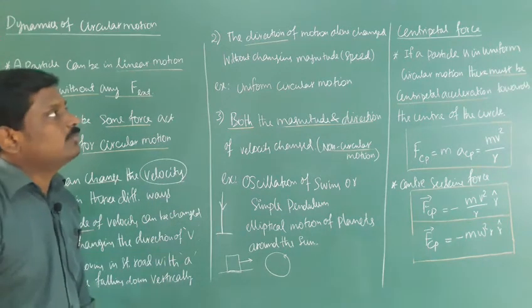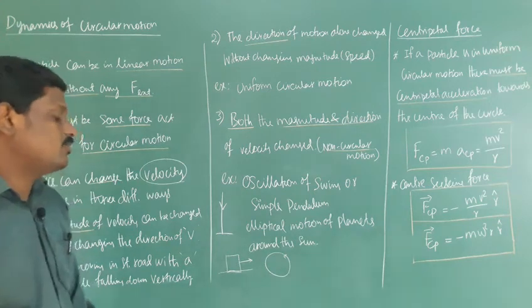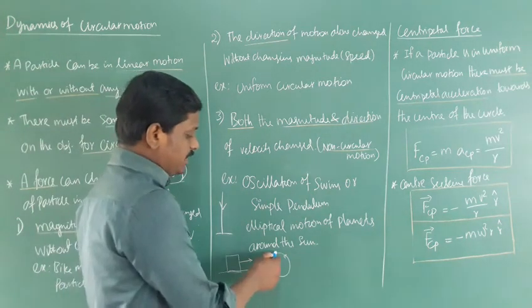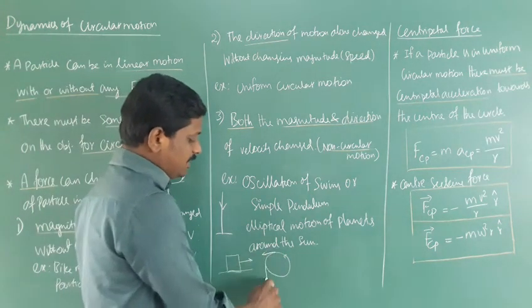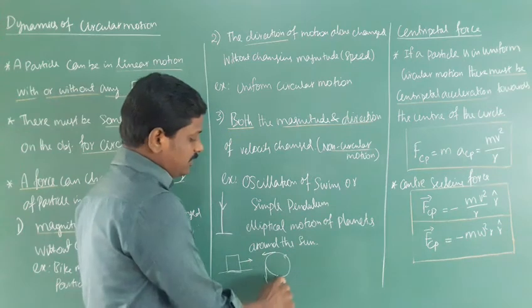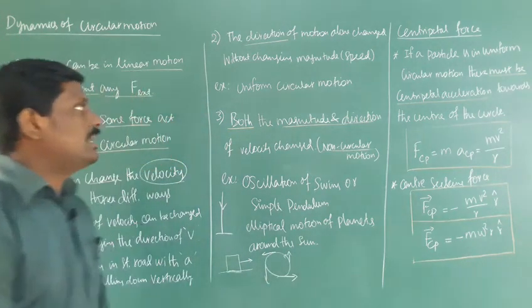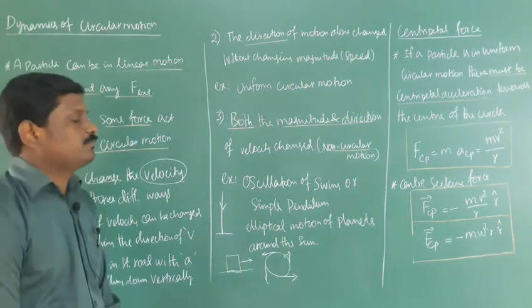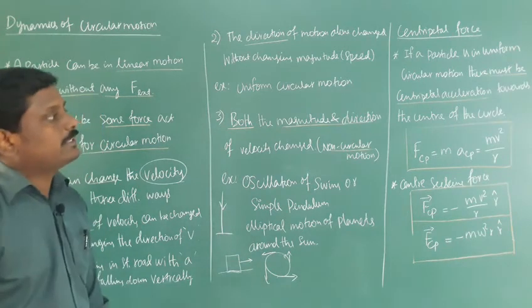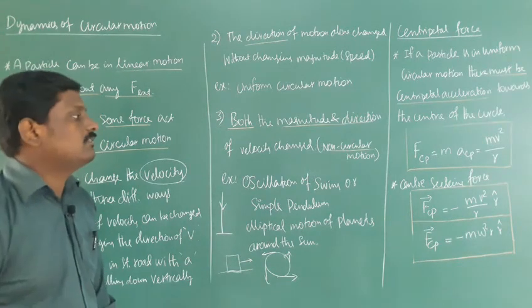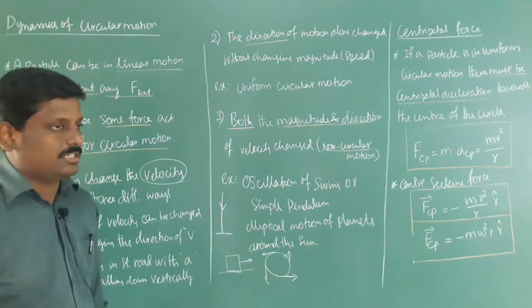Second case: the direction of motion alone changes. When the direction alone changes, the particle is moving in a circle — its direction only changes but the magnitude of velocity remains the same. That is uniform circular motion. Third case: both magnitude and direction of velocity change — that is non-uniform circular motion.